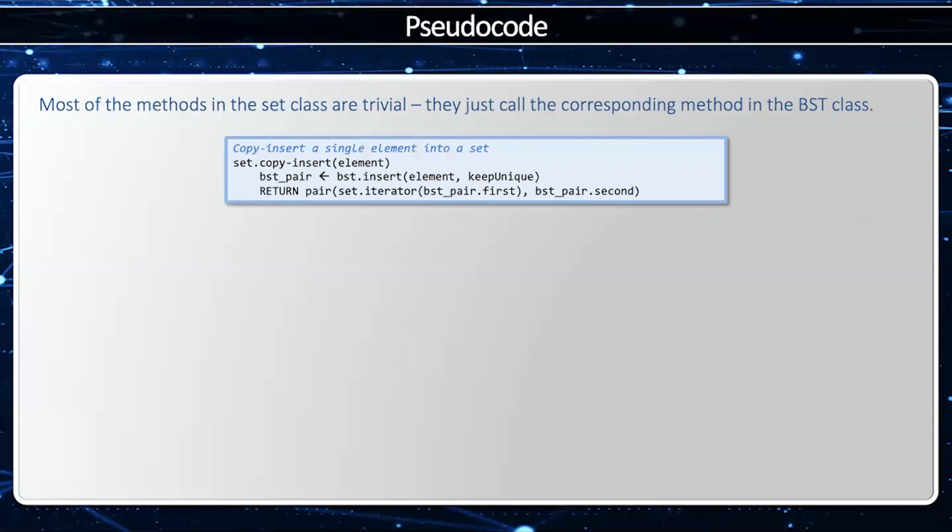First of all, if I'm going to copy insert a single element, then all I have to do is insert into the BST, and I'm going to make sure that it is unique. In other words, I don't want to have duplicate elements. And that'll return a pair, the element plus whether or not it was uniquely inserted, and I'll return that pair. Set's find method is simply going to call BST's find, and it will return, well, BST's find will return a BST iterator, but I got to convert that into a set iterator, which the client will use.